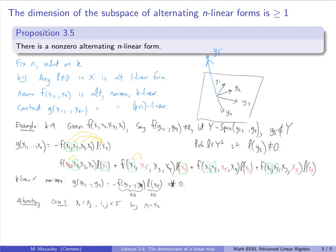Indeed, L(x1) = L(x2) since x1 = x2, and f(x5, x2, x3, x4) = −f(x2, x5, x3, x4) = −f(x1, x5, x3, x4) by the skew-symmetry of f — all we did was swap two inputs. So these two terms are negatives of each other and cancel, confirming g is alternating in this case.